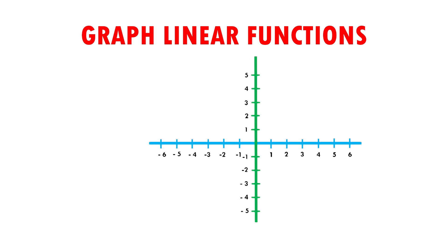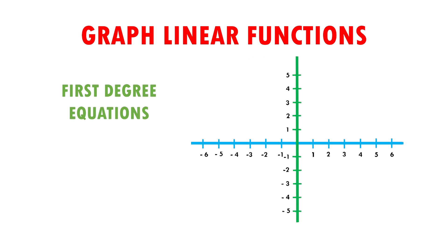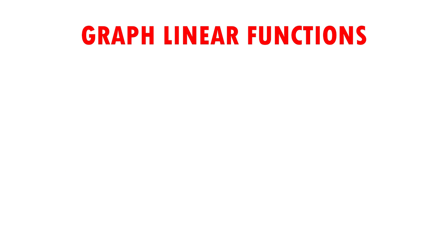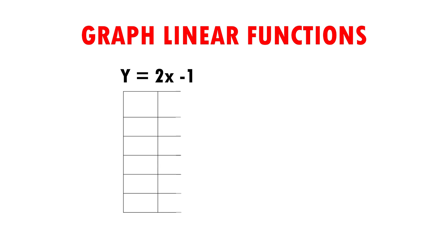In this case, we will see equations of first degree. This means that the exponents are worth one, and they are also called linear equations because their graph is a straight line. Here we have y equals 2x minus 1, and we're going to make a table.